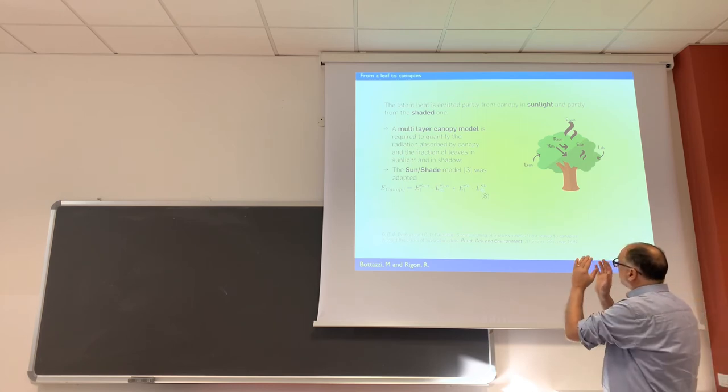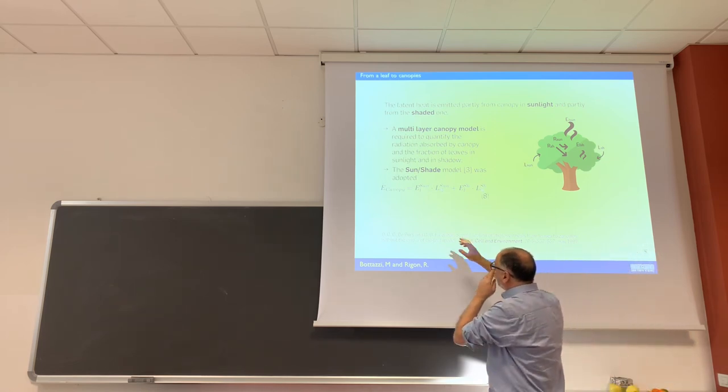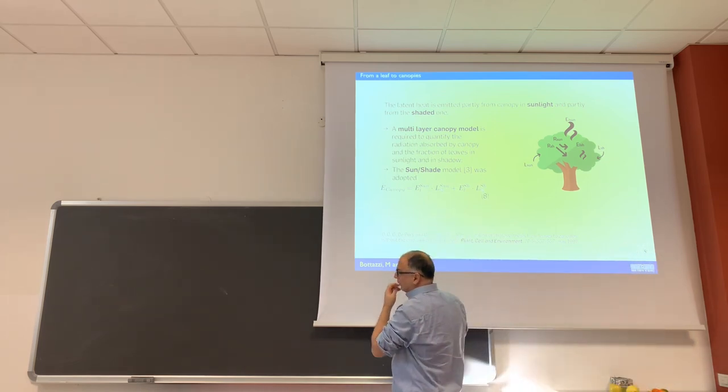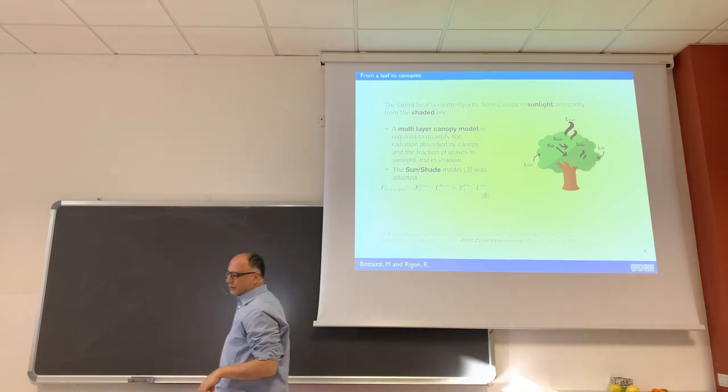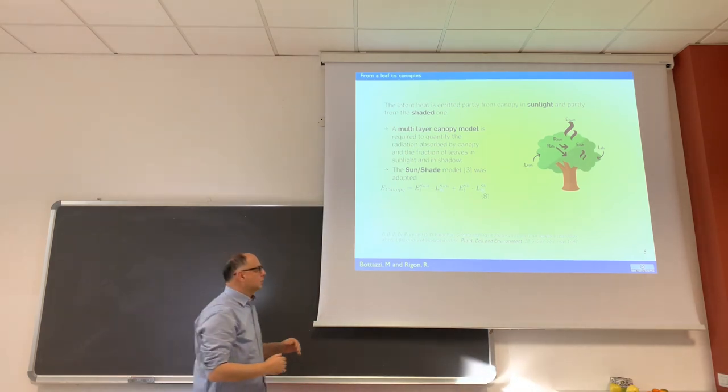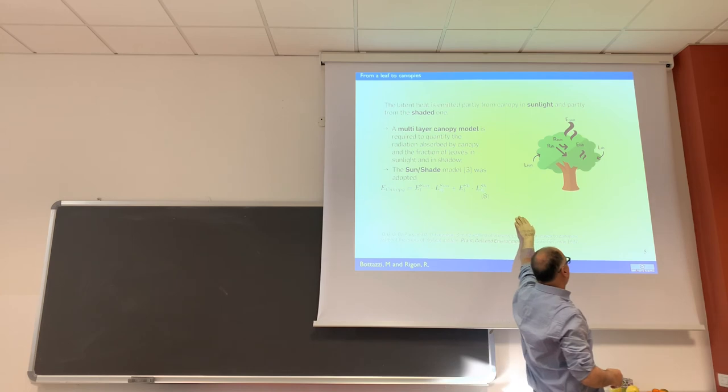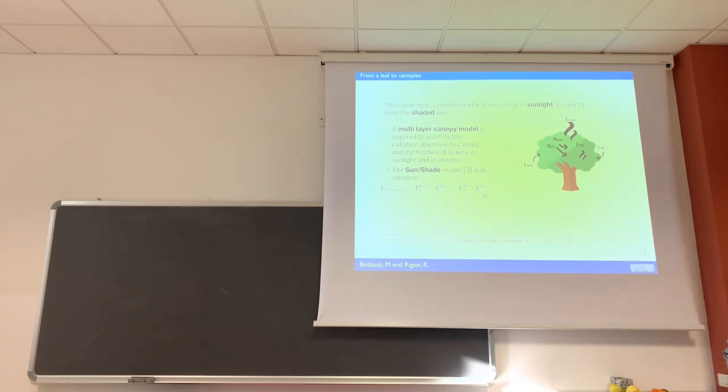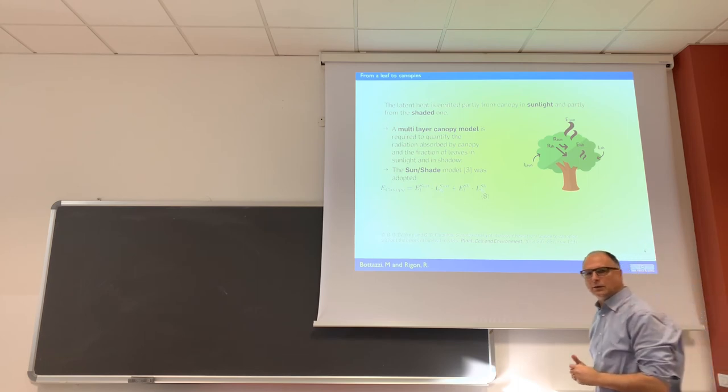So we have to account for the leaf on the sun and the leaf in shadow, and in case, considering the radiation coming to the soil as what remains from shadowing from the leaf, from the trees.